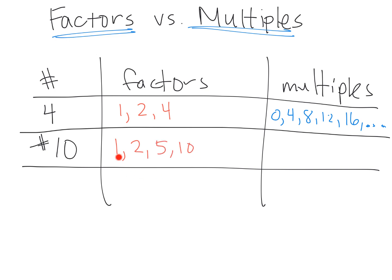As a reminder, they need partners, right? 1 times 10 is 10, 2 times 5 is 10. And going back up here, the partner, 1 times 4 is 4, and 2 times 2 is 4. So 2 is its own partner. So we need to always have partners, don't we? And so the factors of 10 are 1, 2, 5, and 10.